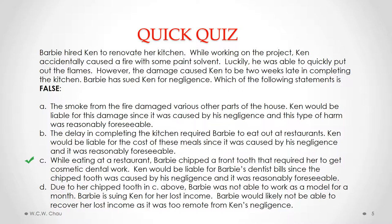B is also a true statement. It says the delay in completing the kitchen required Barbie to eat out at restaurants, and Ken would be liable for the cost of these meals since it was caused by his negligence and it was reasonably foreseeable. There is factual causation in that Ken's negligence in causing the fire led to the delay in completing the kitchen, which required Barbie to eat out at restaurants because she didn't have a kitchen at home. It is also reasonably foreseeable that a fire would cause a delay in finishing the kitchen renovation, and therefore Barbie would have to eat out.